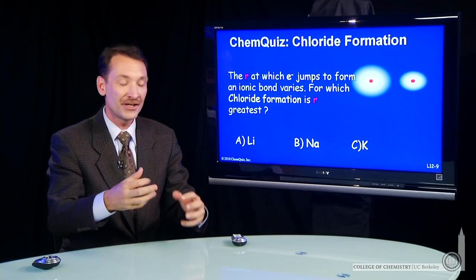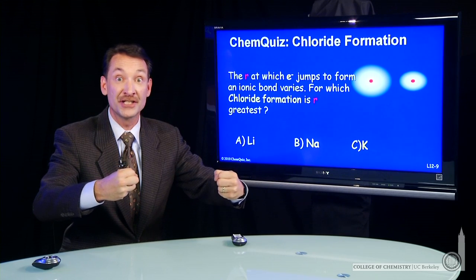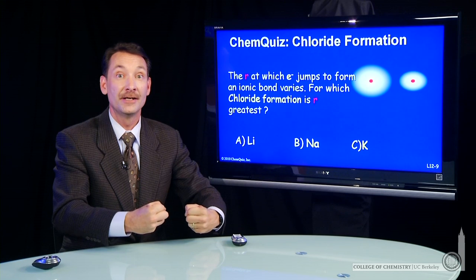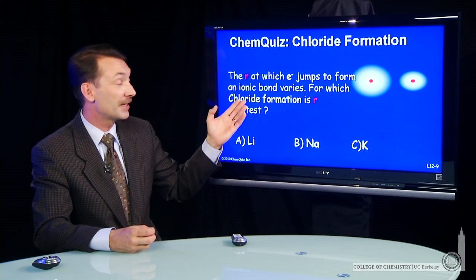So that interaction, the distance, and the fact that the bond is stronger and more energy is released as that bond gets smaller, helps us understand how ions form in ionic bonds.